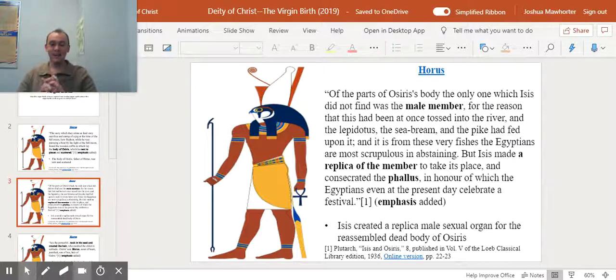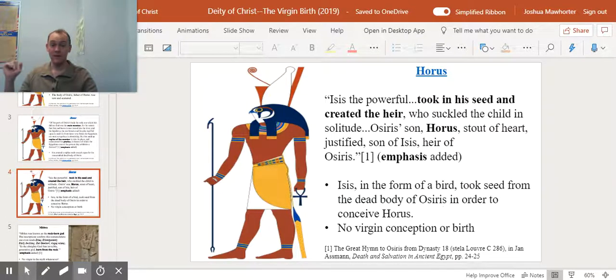But Isis made a replica of the member to take its place and consecrated the phallus, in honor of which the Egyptians, even at present day, celebrate a festival. If that's what it sounds like, it probably is. That Osiris' male member was missing. It was thrown into a river, eaten up by fish, as one legend puts it. And so she had to build a replica. And there's a festival, a celebration for this replica.